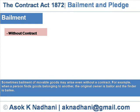Without contract: sometimes bailment of movable goods may arise even without a contract. For example, when a person finds goods belonging to another, the original owner is the bailer and the finder is the bailee.